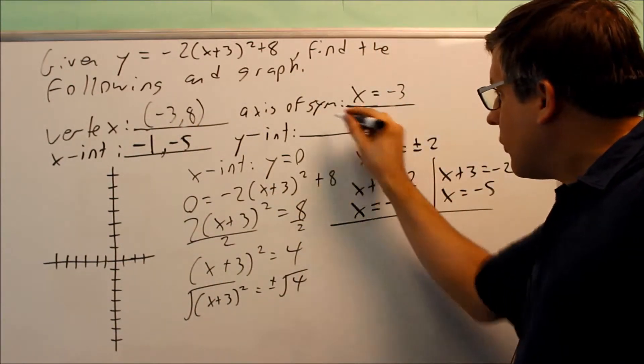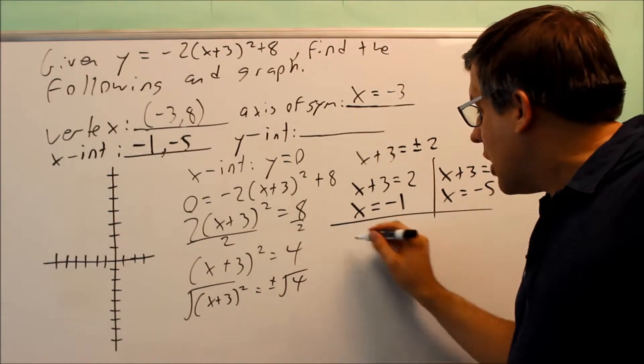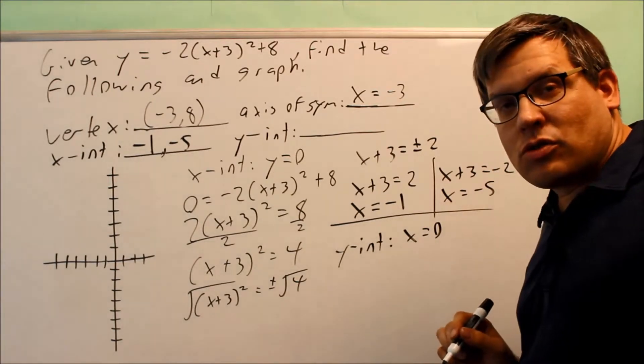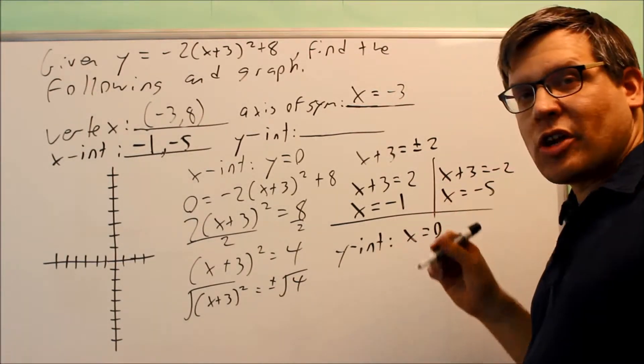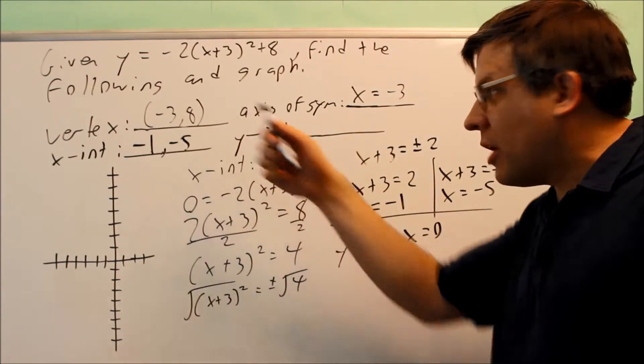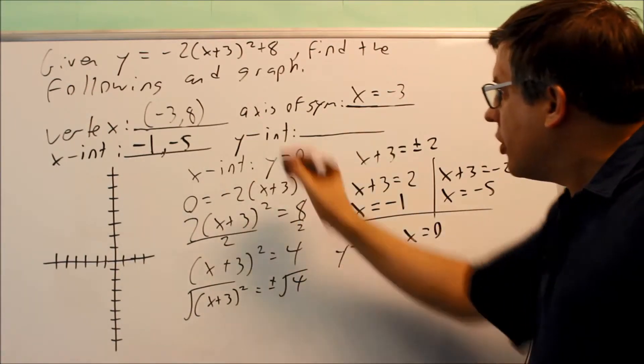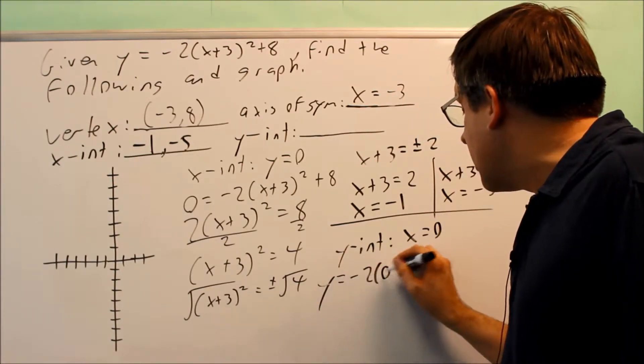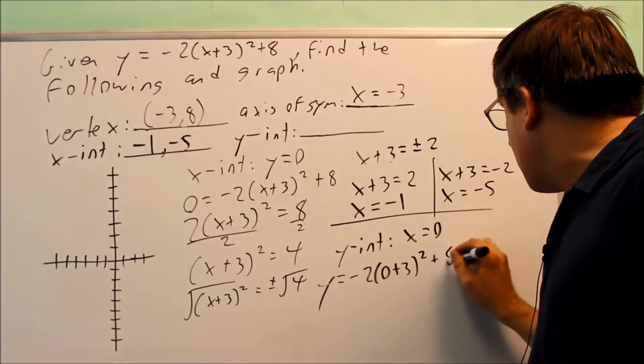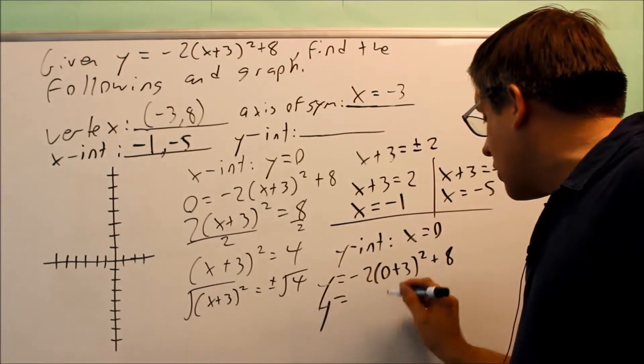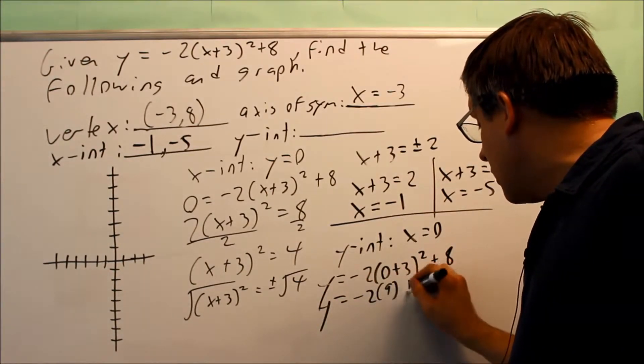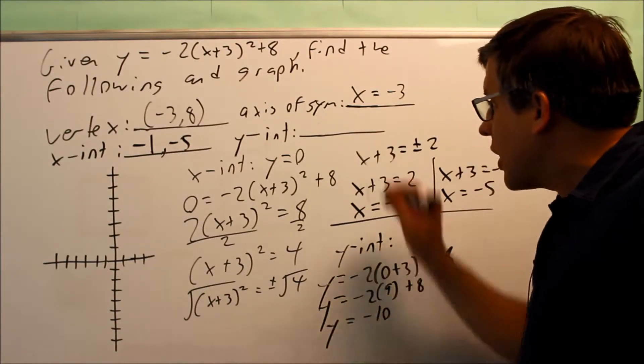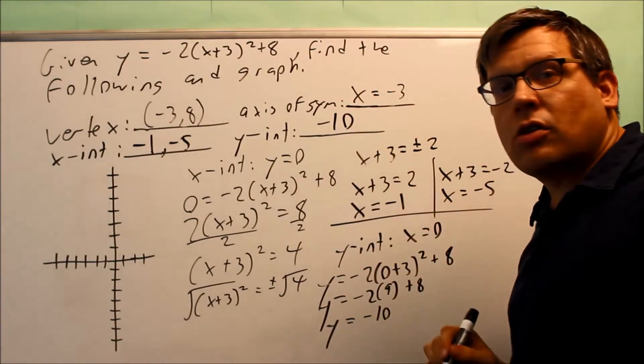So now I want to find the y-intercept. The y-intercept is where you make the x equal to 0. Now a lot of times a common mistake would be, oh, if x is 0, automatically y is 0. That's not the case here. You've got to put 0 in here and actually work it out. So if we put that in there, you get 0 plus 3 squared, and then you get plus 8. So that gives us negative 2 times 9 plus 8, or negative 18 plus 8 would be negative 10. So negative 10 is going to be the y-intercept.